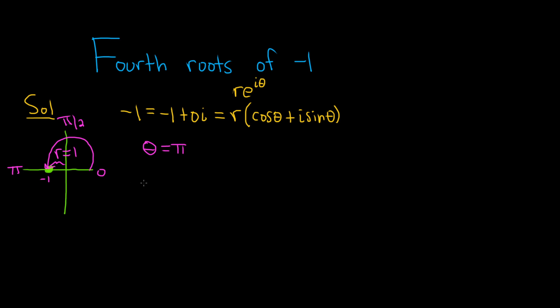So now we can take our complex number and write it in the correct form. r we said was 1, theta is pi. So we have that negative 1 is equal to 1 times cosine of pi plus i sine pi. It seems like a very convoluted way to write negative 1, but now we've done that.